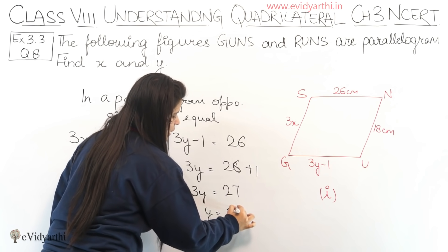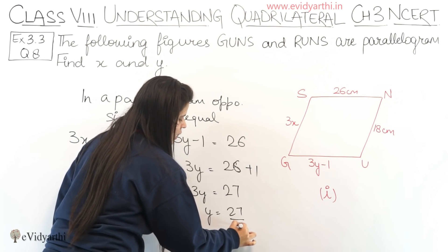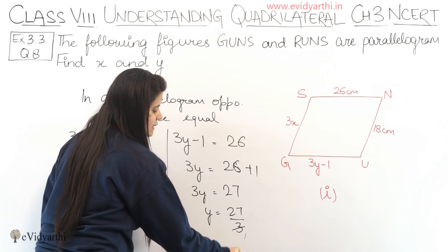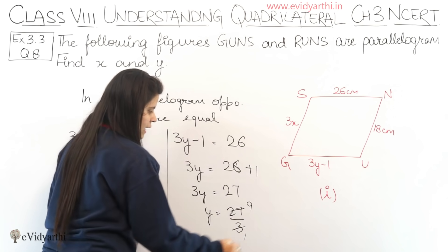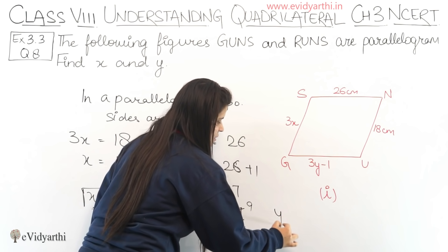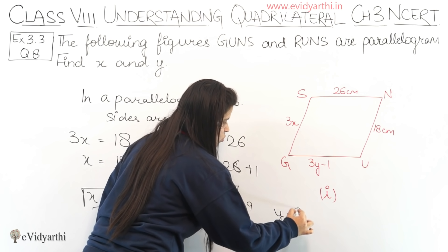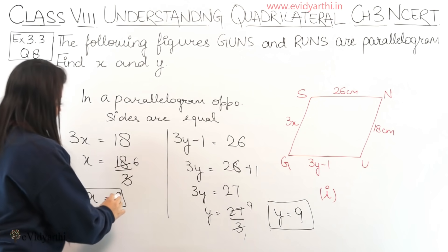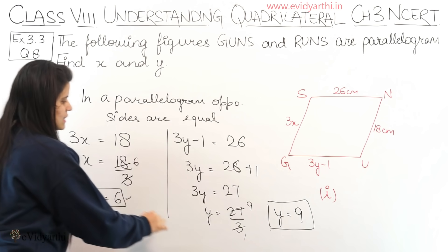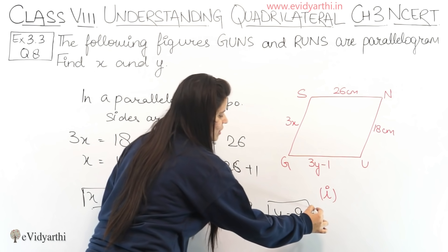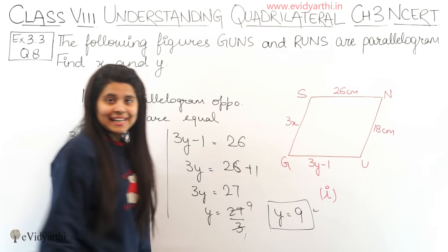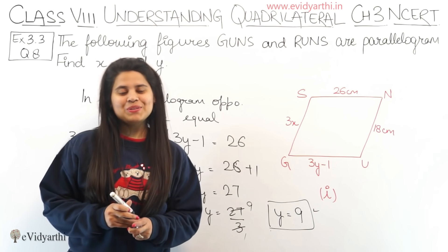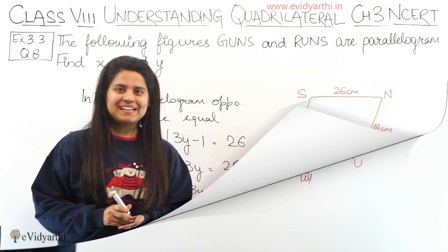Y equals 27 divided by 3. Dividing, 3 nines are 27, so Y equals 9. So we have X equals 6 and Y equals 9. This was part number 1. Let's come to the next part.